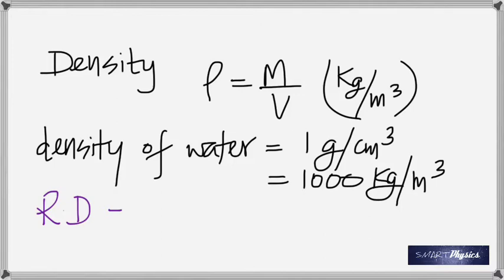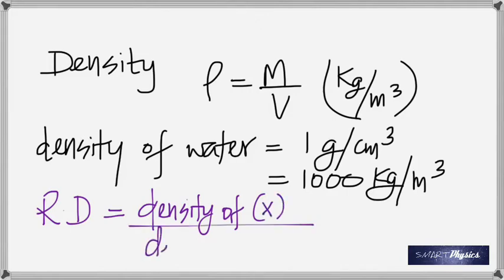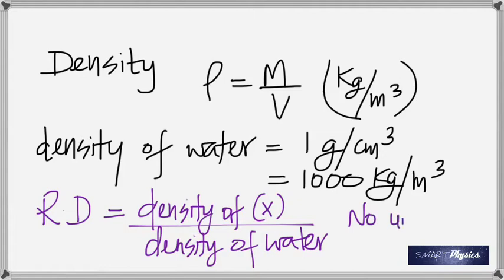Since we compare everything with water, we define a new term called relative density. Relative density is the density of the substance divided by the density of water. It has no unit because it's a ratio. For example, the relative density of mercury is 13.6, which means mercury is 13.6 times heavier than an equal volume of water.